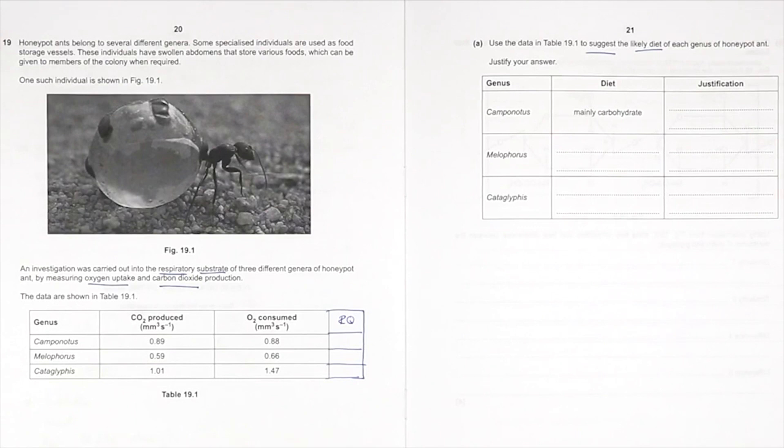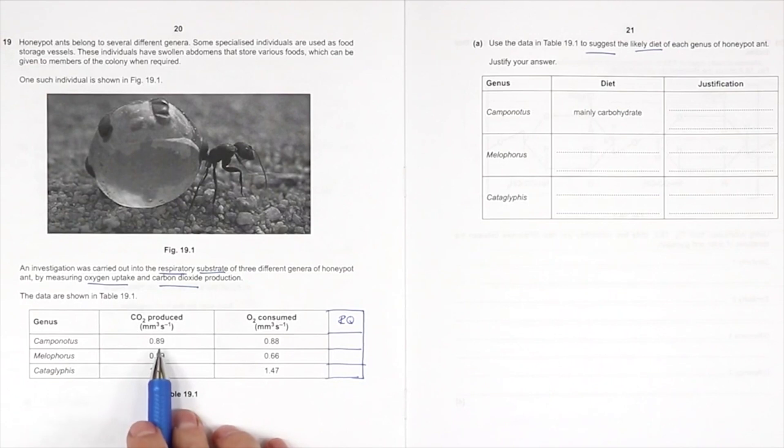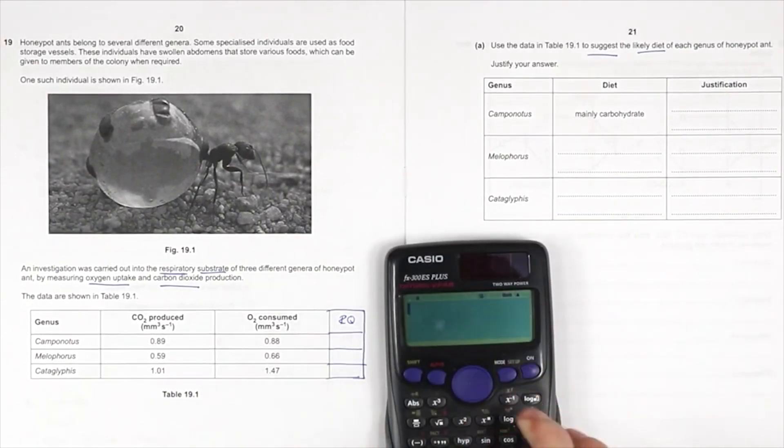So the respiratory quotient is basically the ratio of oxygen and carbon dioxide produced. We can see here, we've got 0.88 and, well, I'll do the sums, but basically they're the same.